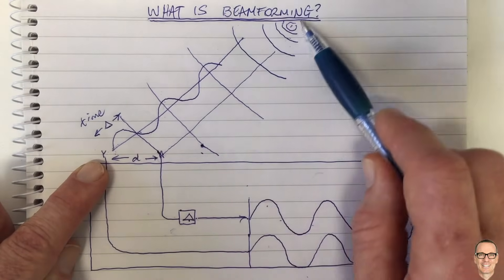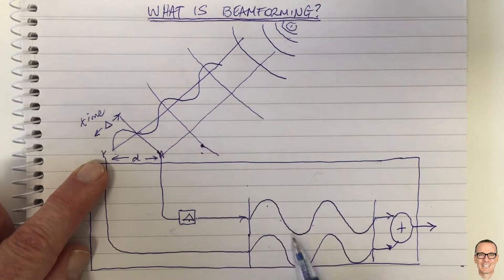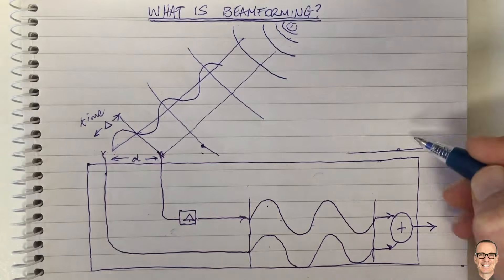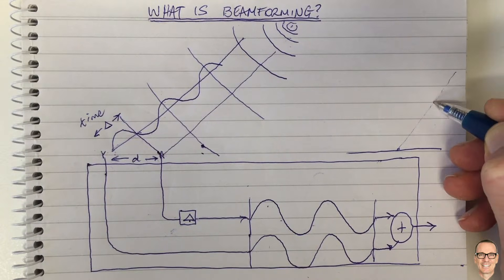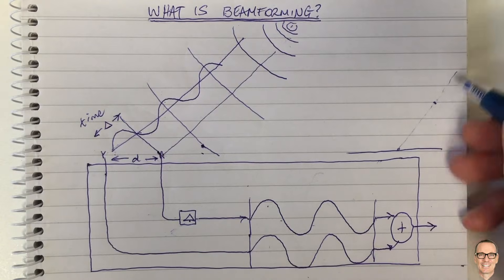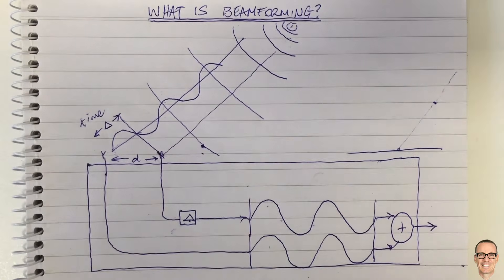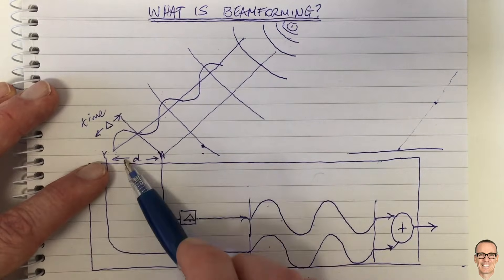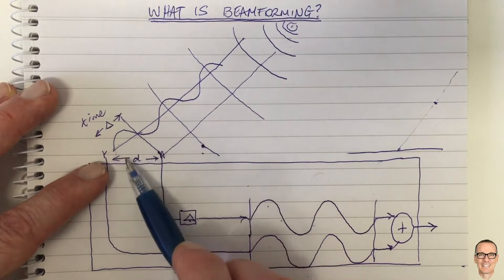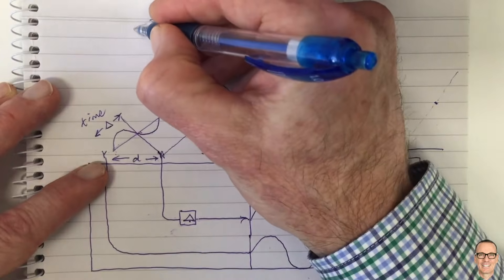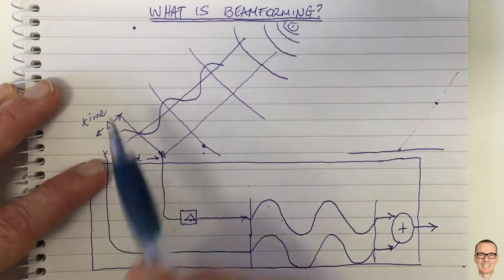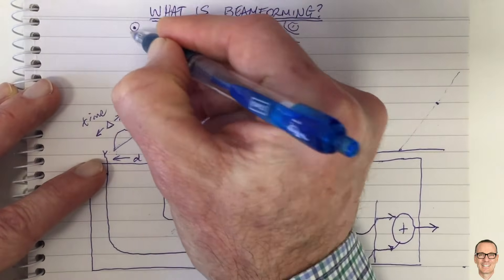So why is it called beamforming? We're getting the energy from that direction as an addition, so the two waveforms add constructively. We can plot what's called a beam pattern — in that direction we're getting a nice strong signal, where the distance along a line represents signal strength. Now let's think about a signal from another user, with the same delay tuned for that angle, frequency, and antenna spacing.